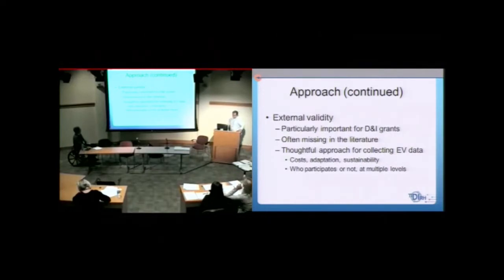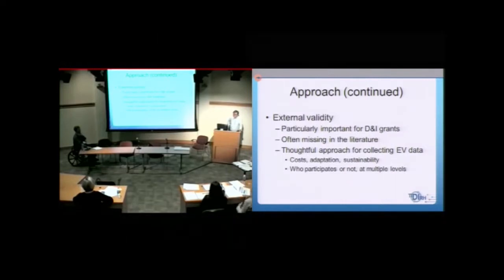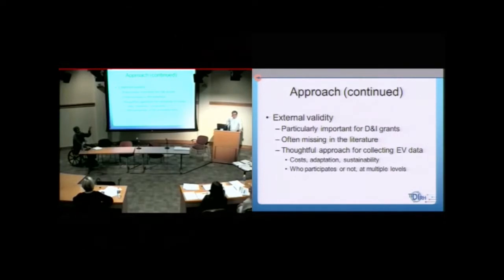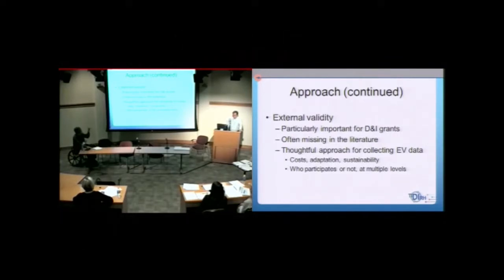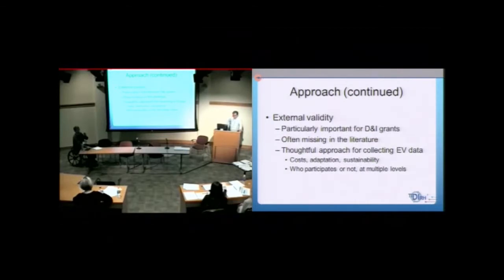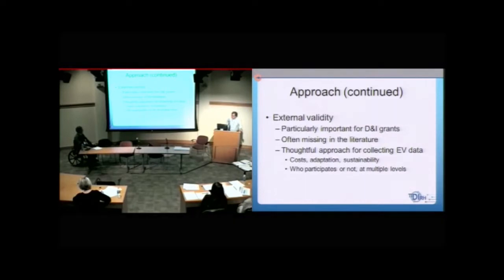And here's a little bit more on external validity. Often important, often missing in the literature. There's good resources. Actually, Russ and Larry Green, West Coast Larry Green, have written quite a bit about that have, you know, nice checklists for external validity. And so while you don't have to go through all, what, 24 items there, you might use those domains to say we're addressing these four main domains around external validity. And if you need any of those articles, if you don't have them, easily we can get those for you.